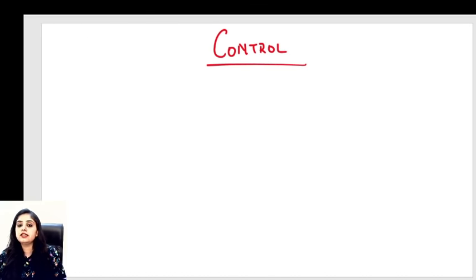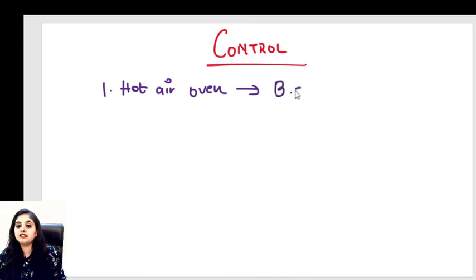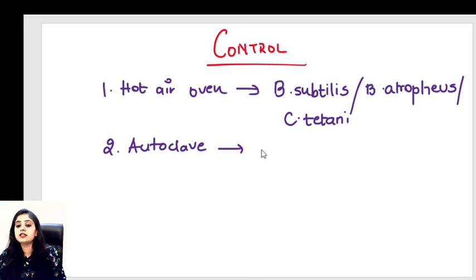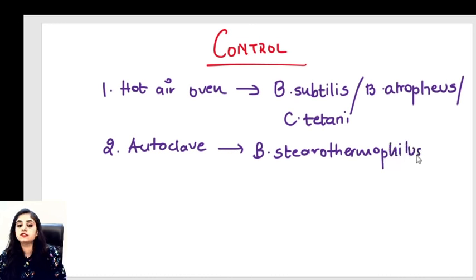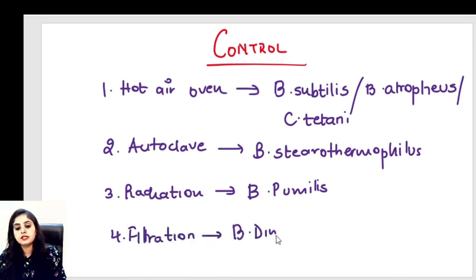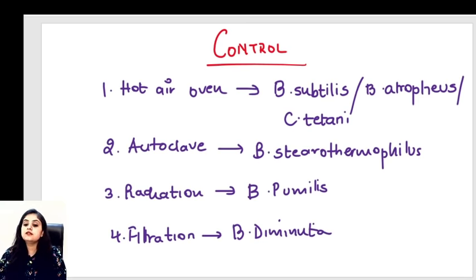Let's compile the list of controls for all sterilization methods studied so far. Hot air oven / dry heat: Bacillus subtilis, or cousin brother Bacillus atrophius, or Clostridium tetani. Autoclave: Bacillus stearothermophilus (a high-temperature organism). Radiation: Bacillus pumilus (R and P look alike). Filtration: Brevundimonas diminuta (very small organism for very small pores).